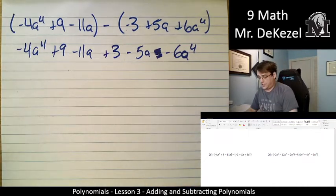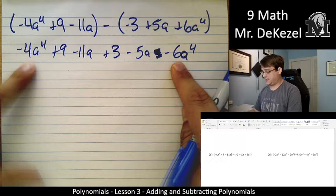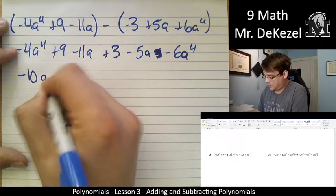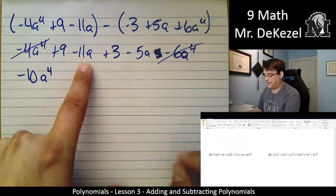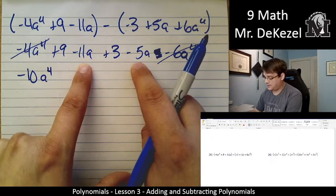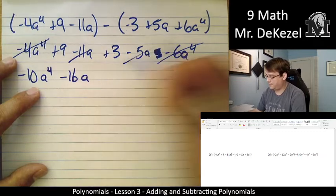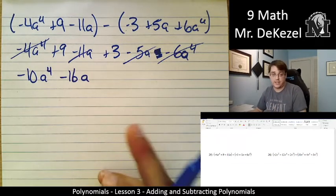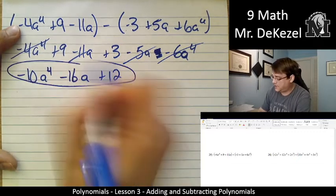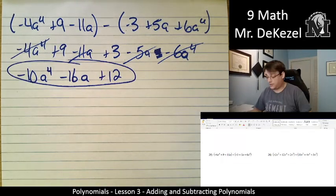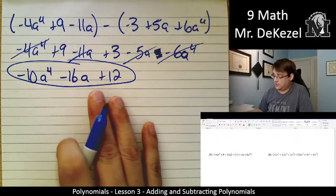We are going to combine all of the terms that have the highest power first. So that is minus 4 and minus 6. That's minus 10a to the power of 4. Let's do the next one. We've got minus 11a and minus 5a. That's minus 16a. Go ahead and feel free to strike out the ones that you've already done if it makes it more clear. And then 9 plus 3 is 12. So this ends up being a 4th degree trinomial.